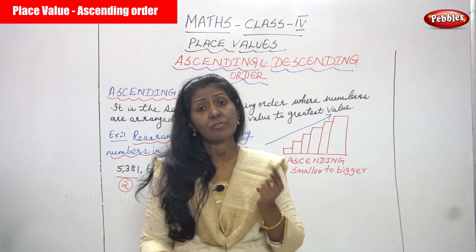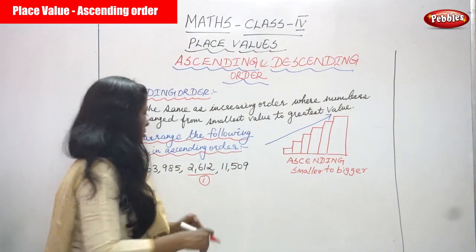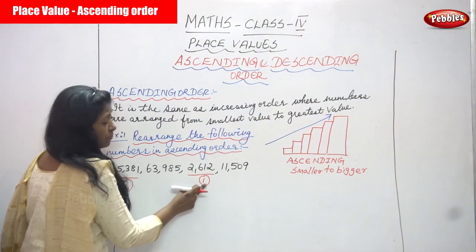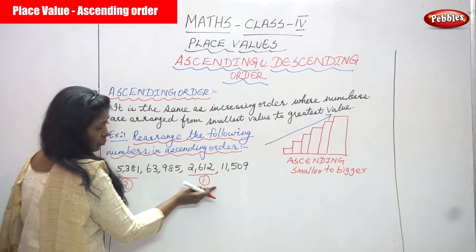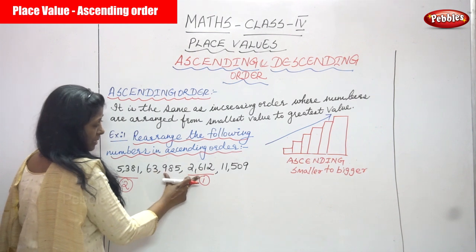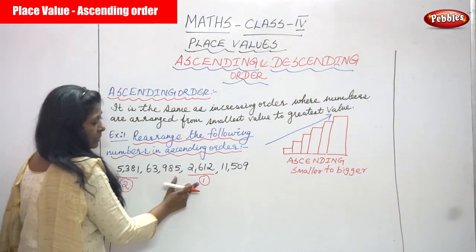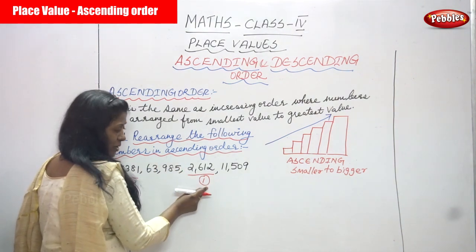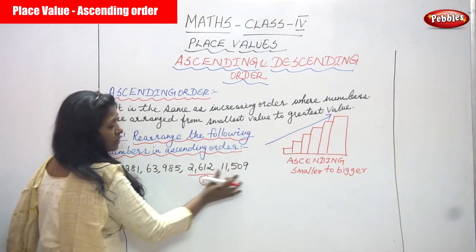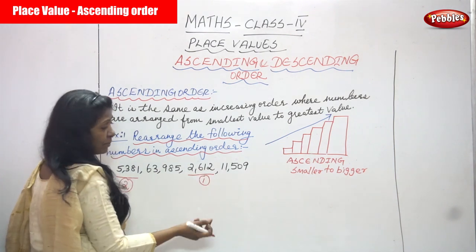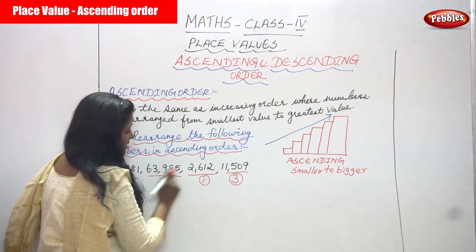You must give first priority to the least number, then move to the bigger number. Among the four-digit numbers, two thousand six hundred and twelve is first and five thousand three hundred and eighty-one is second. Now for the five-digit numbers — sixty-three thousand nine hundred and eighty-five and eleven thousand five hundred and nine — compare these two. Eleven thousand five hundred and nine is the smaller five-digit number, so it gets third priority.